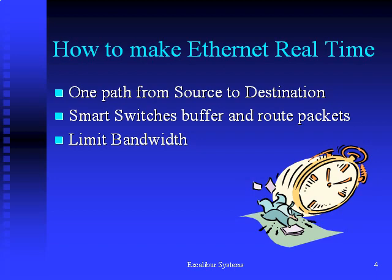Since aircraft are closed systems, this is easily done and guarantees the same path and timing is used each time a packet is transferred. Switches are programmed with the paths based on data in the MAC header. Limiting the data that each end system may transmit guarantees that the switches are not overloaded.